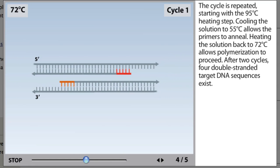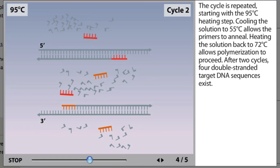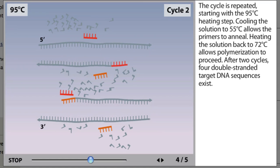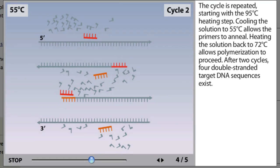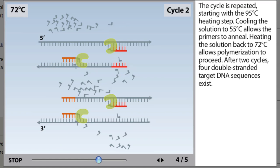The cycle is repeated, starting with the 95 degrees Celsius heating step. Cooling the solution to 55 degrees Celsius allows the primers to anneal. Heating the solution back to 72 degrees Celsius allows polymerization to proceed.